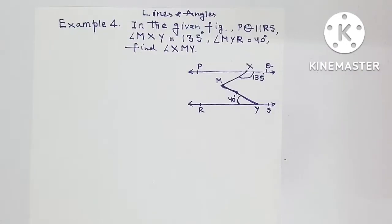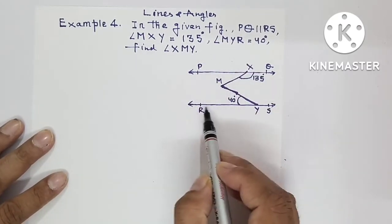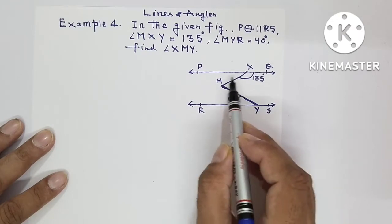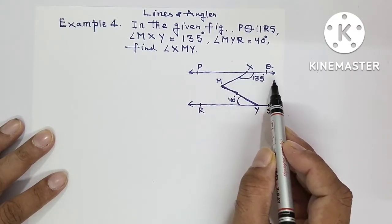Hello everyone, in today's video I am doing one example of chapter Lines and Angles, and this example is very important. So this is the figure, and in this figure PQ is parallel to RS, angle MXY is equal to 135 degrees.